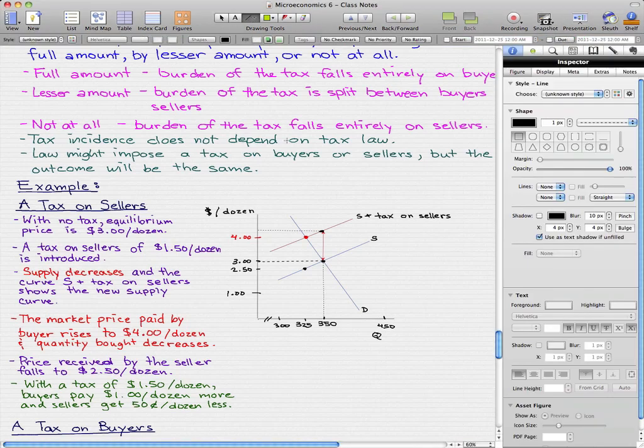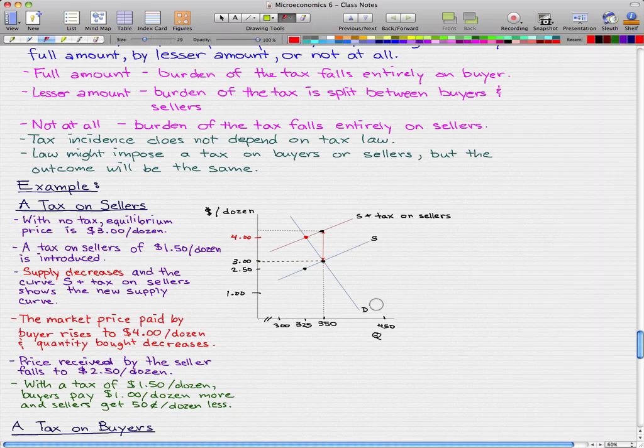With no tax, we can see that the equilibrium price is $3 per dozen, and we're going by a dozen eggs or something. We have quantity here and dollar per dozen on the vertical axis. With no tax, equilibrium price is $3 per dozen. Now let's say a tax on sellers of $1.50 per dozen is introduced.